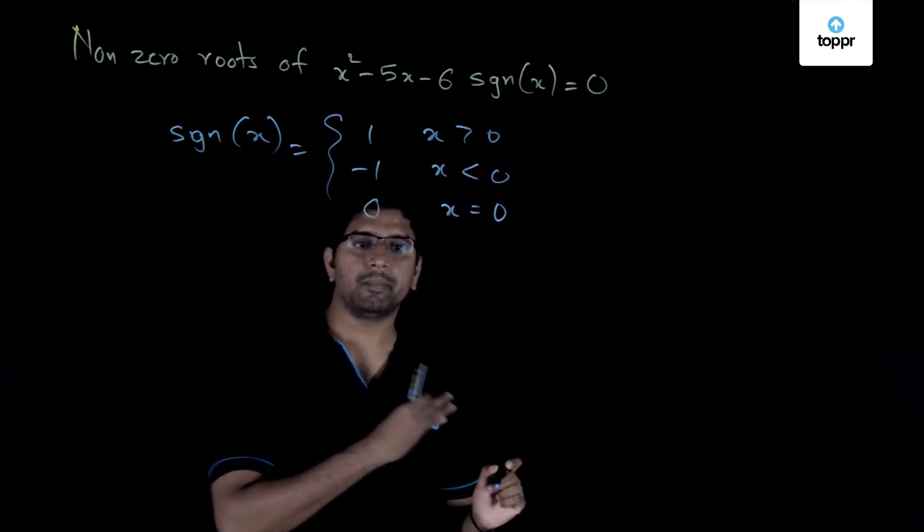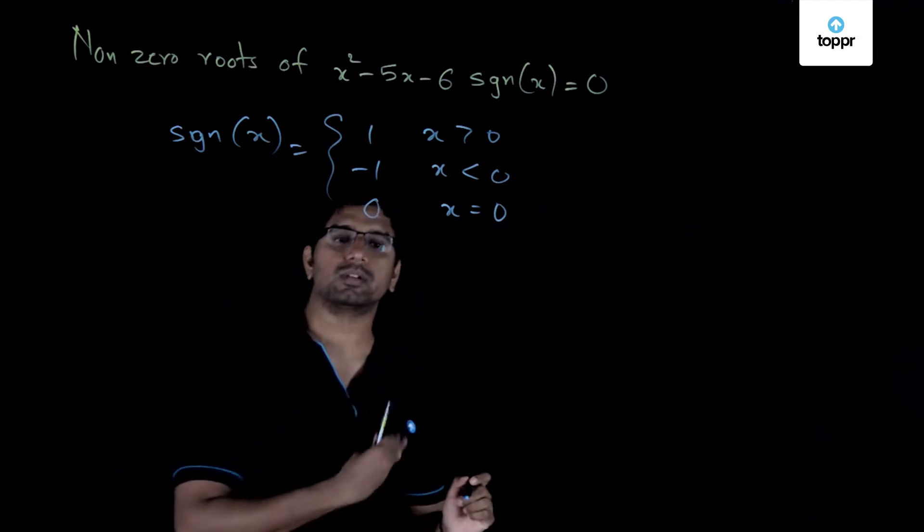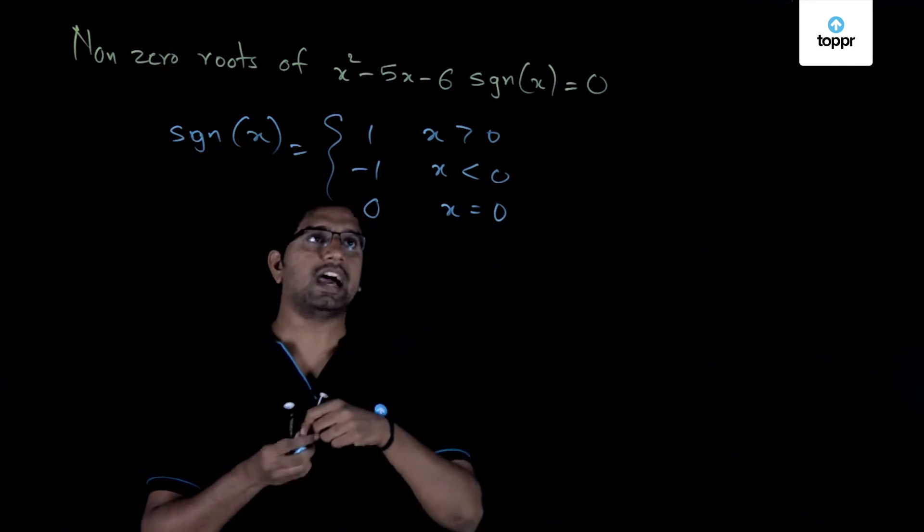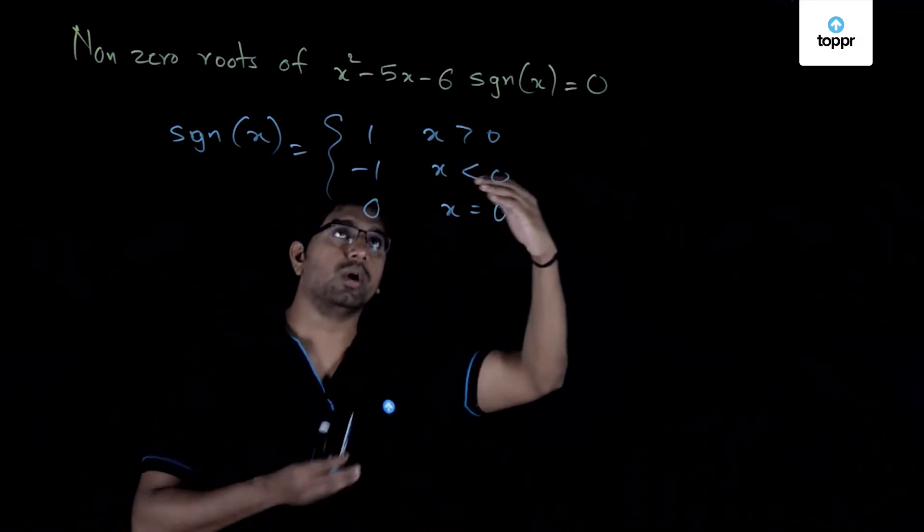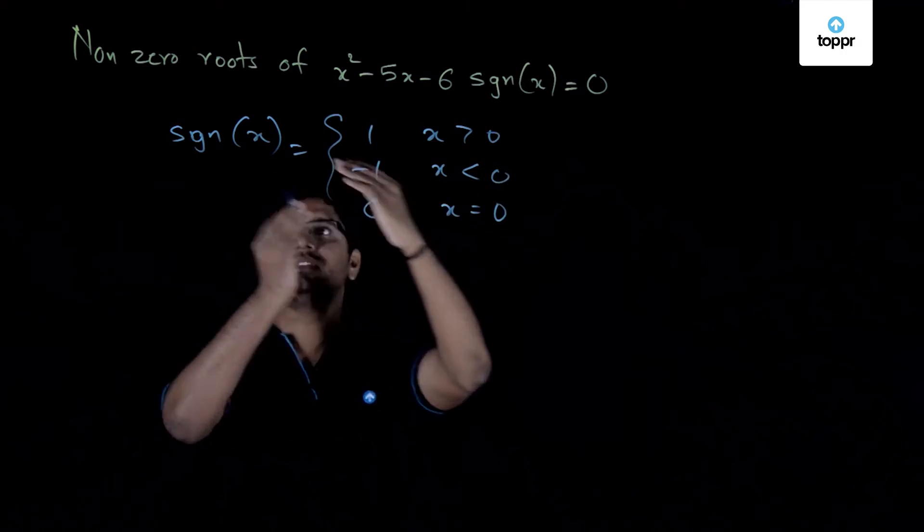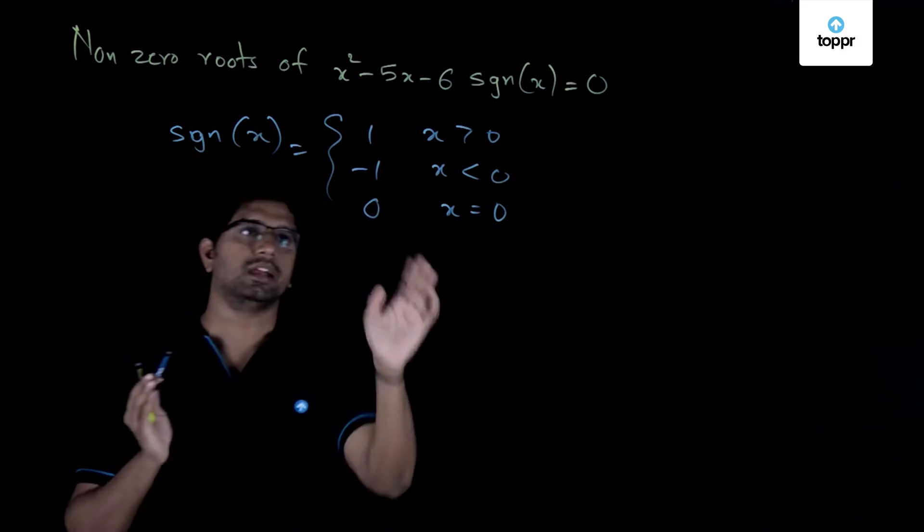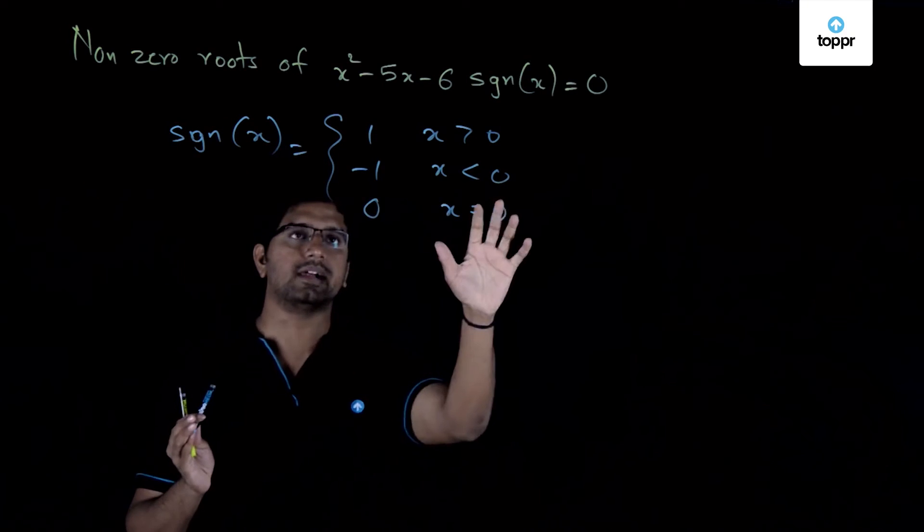So it is a good problem because it actually tests whether you know the concept of the signum function or not. So once you have this, basically we are looking at two quadratic equations in this case because it is already given that x is nonzero. So you can forget about the last case.